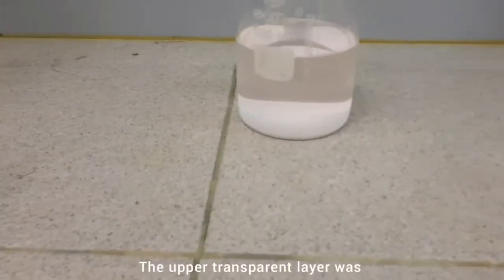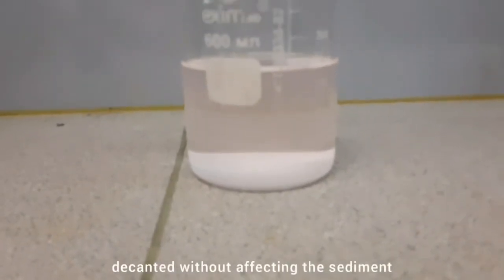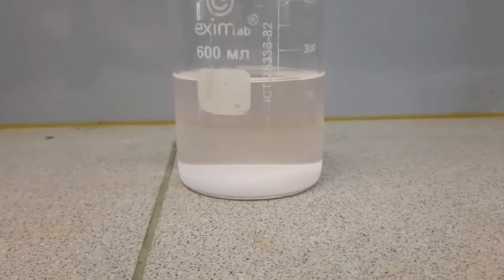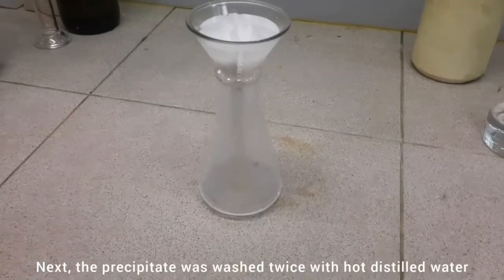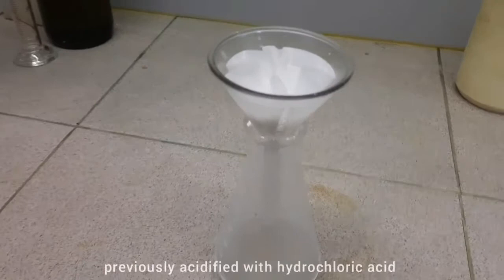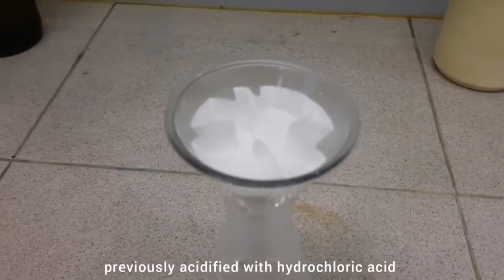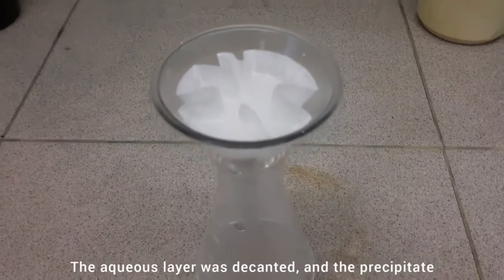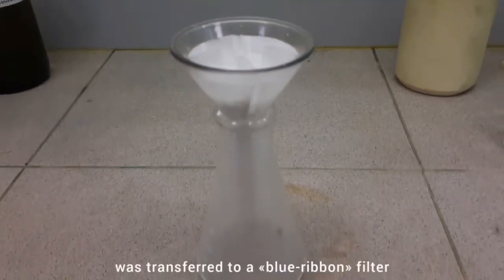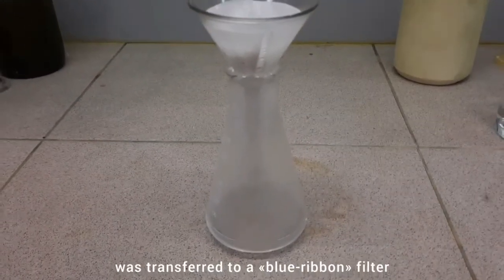The upper transparent layer was decanted without affecting the sediment. Next, the precipitate was washed twice with hot distilled water previously acidified with hydrochloric acid. First, the aqueous layer was decanted and the precipitate was transferred to a blue ribbon filter.